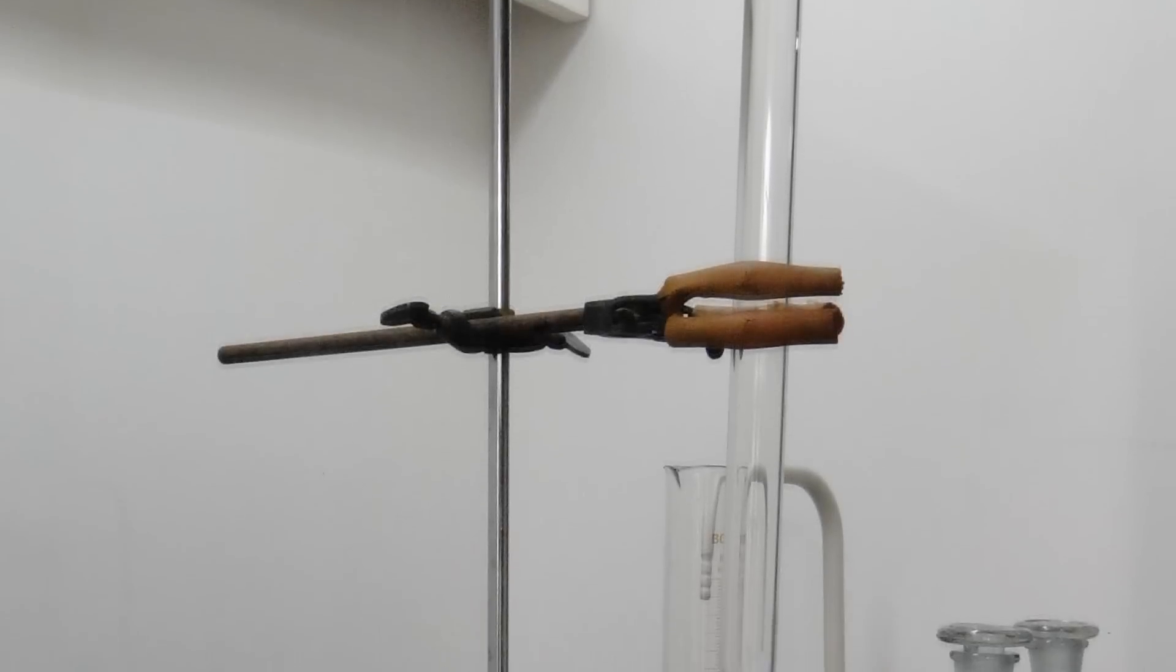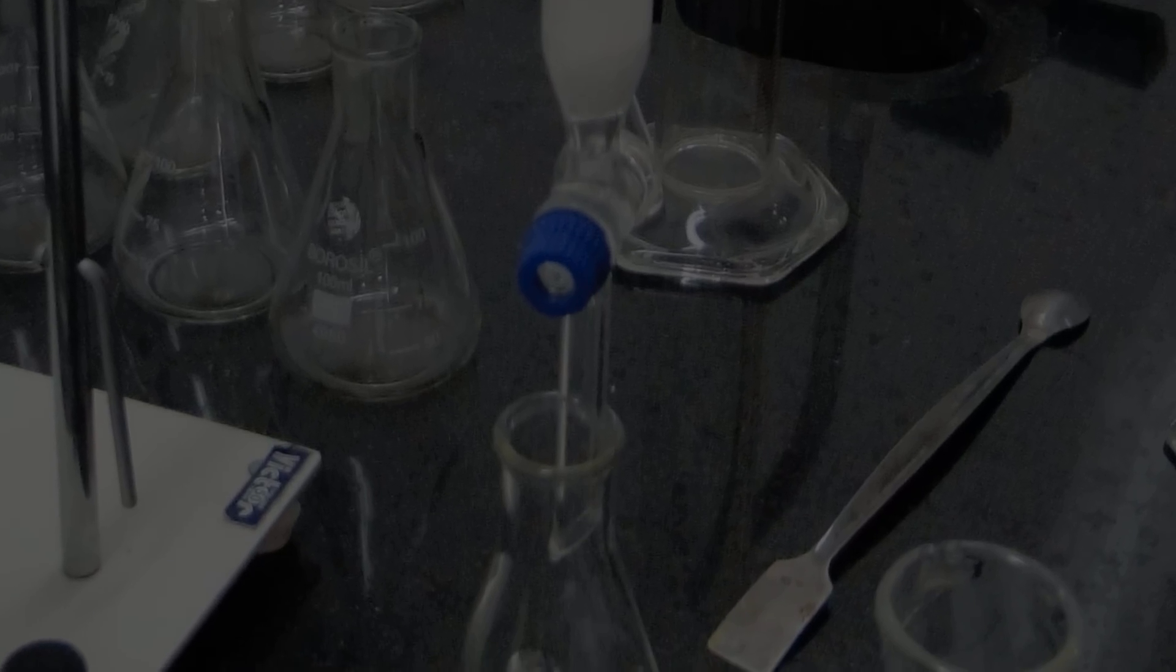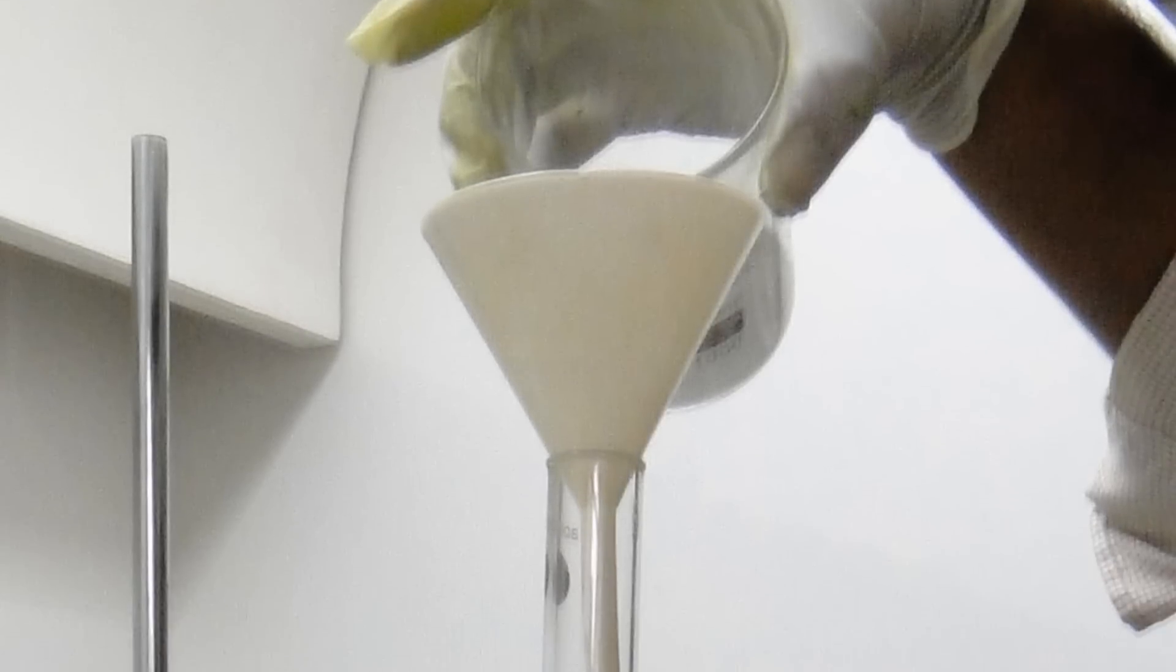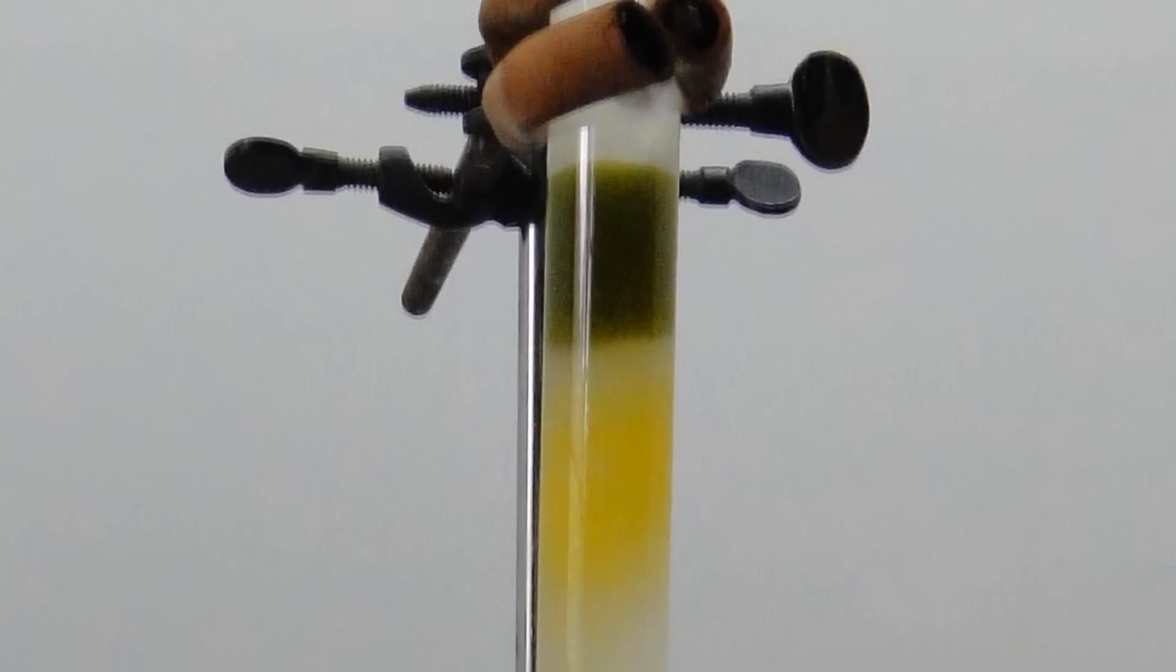In this experiment, we will use the technique of column chromatography to separate the pigments from the leaves of spinach. Column chromatography is an isolation and purification technique used extensively by organic chemists to obtain pure samples of chemicals from natural sources or from reaction sequences.